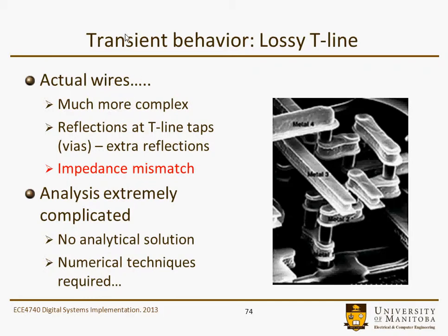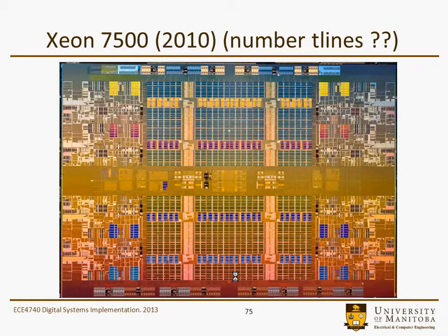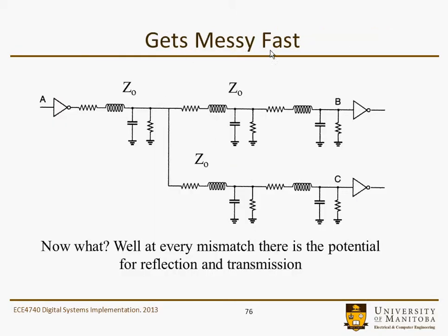To add a little bit of insult to injury: if you're looking at the transient behavior of a lossy T-line, the actual wires are much more complex — reflections at every T-line tap and every via. These all give impedance mismatches, which contribute to a lot more distortion and reflections on the line. The analysis is extremely complicated; you wouldn't have an analytical solution and would probably still just have approximate numerical techniques. Here, for example, is a Xenon 7500 processor around 2010. Most of these lines are very short and would be modeled as a lumped element, but some might be long enough that you'd have to consider transmission line effects — and the situation gets messy pretty fast.